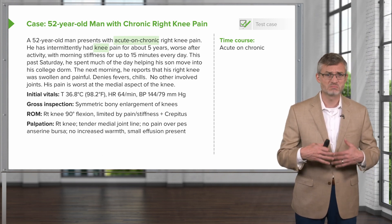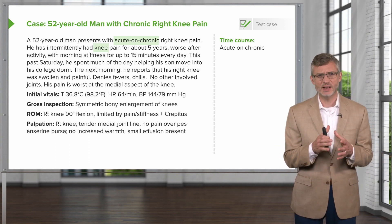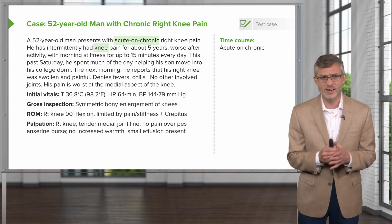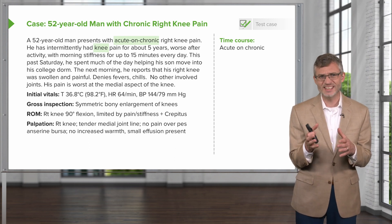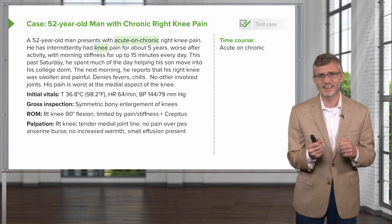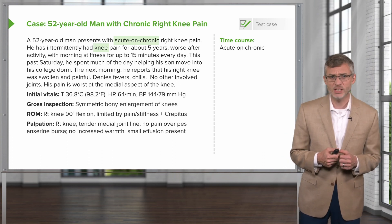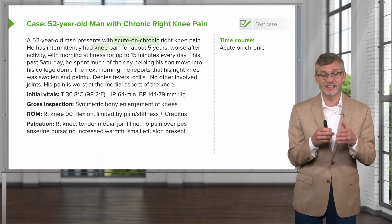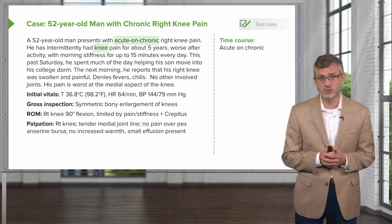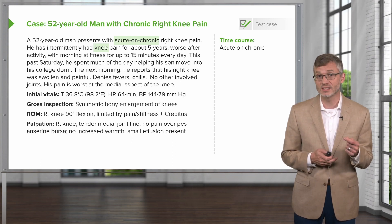Initial vitals are completely unremarkable. On gross inspection, we see symmetric bony enlargement of the knees. On range of motion testing, his right knee is limited to about 90 degrees of flexion, limited by pain and stiffness, and there is crepitus on exam. On palpation of the right knee, we find a tender medial joint line, no pain over the pes anserine bursa, no increased warmth, and a small effusion is present.